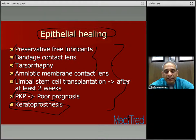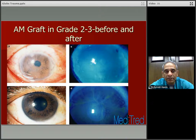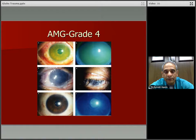Initial things you can do include frequent use of preservative-free lubricants, bandage contact lens to promote epithelial healing, and tarsorrhaphy. Nowadays the free availability of amniotic membrane contact lens should also be considered. If those don't work, refer the patient to a specialist for consideration of limbal stem cell transplantation, and should that fail, a PKP or keratoprosthesis. Here is a patient with amniotic membrane graft in grade two to three — before and after — and following the transplantation, the epithelium healed nicely. Here is another example of a patient with a grade four chemical burn; following AMG — amniotic membrane graft — the epithelium healed nicely.